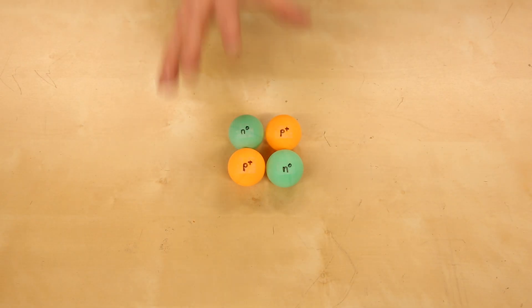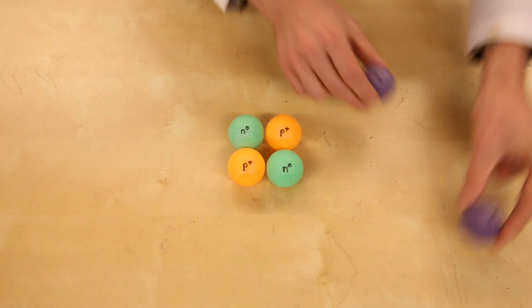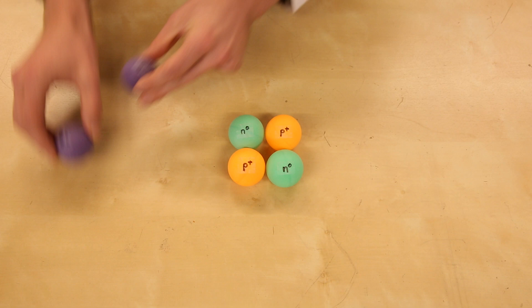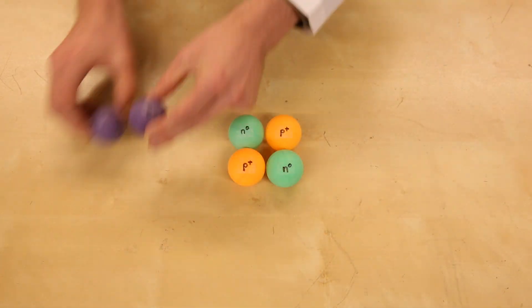The protons and neutrons are tightly packed in the core or nucleus of an atom, while electrons move about this nucleus in regions known as shells or orbitals. Right now, this atom is electrically neutral, as it has the same number of protons and electrons.